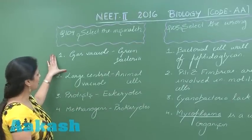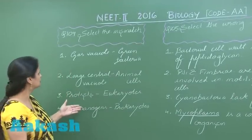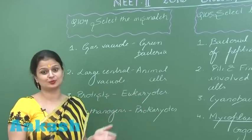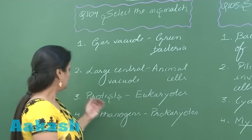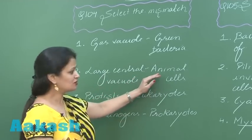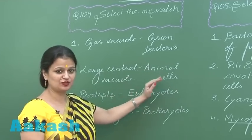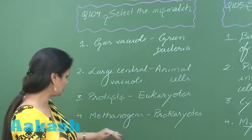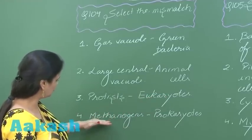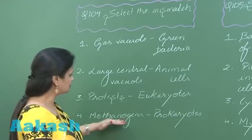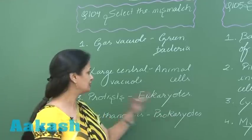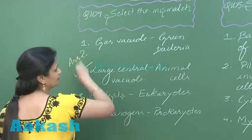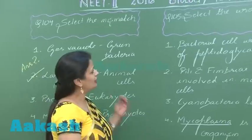In question 104 we have to look for the mismatch. Gas vacuole is present in blue-green algae. The large central vacuole is a feature of plant cells, not animal cells. Protists are unicellular eukaryotes. Methanogens are prokaryotes — they are archaebacteria. So the wrong option here is option number two.